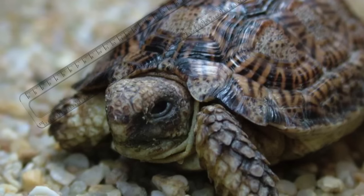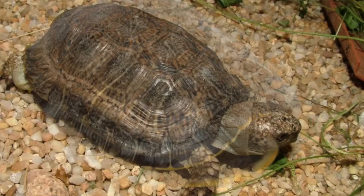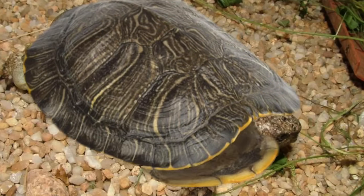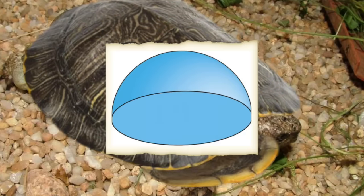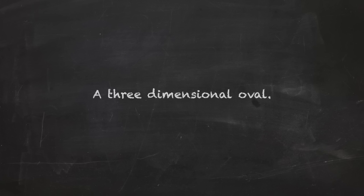His volume can indeed be calculated with the measurements given, but it is a royal pain in the bear buttocks to do so. If we imagine this little turtle being compacted into a shape like this, it makes it way easier for us. This shape is called an ellipsoid, a three-dimensional oval.